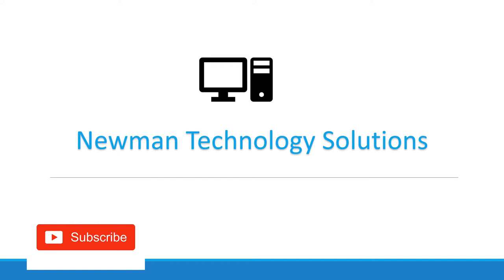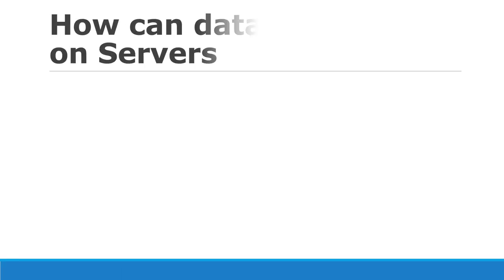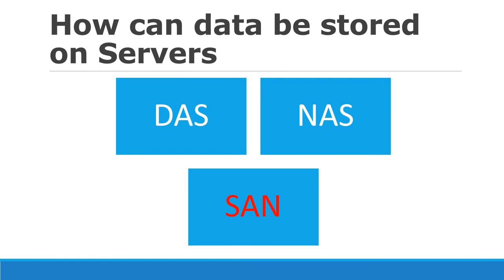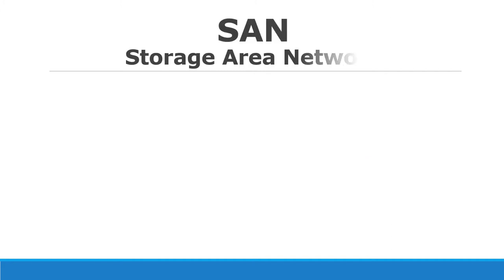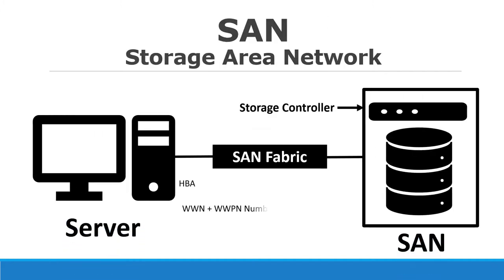Hello, I am Newman. Today we are going to deep dive into SAN, or Storage Area Network. Remember, server data can be stored on three types of storage devices: DAS, NAS, and SAN. We are going to see the features of SAN in detail. In SAN, you have a storage array connected to a server via a SAN fabric.